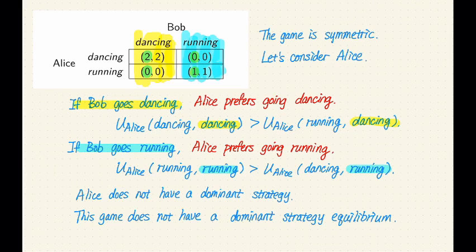So since Alice prefers different things depending on Bob's action, that means there's no single action that's best for Alice, no matter what Bob does. Because of this, Alice doesn't have a dominant strategy. And if Alice doesn't have a dominant strategy, then the entire game does not have a dominant strategy equilibrium.